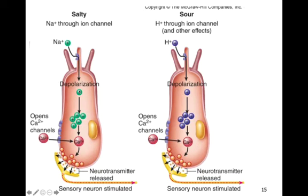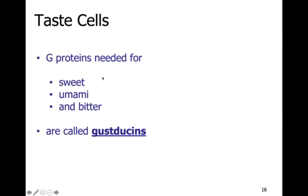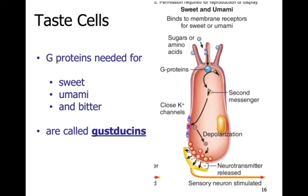What you need to know is that each taste bud has all types of taste cells, and each taste cell will only respond to its particular stimulus — salty responds to sodium, sour responds to hydrogen. For sweet, umami, and bitter, these are called the gustusins, and that requires G-proteins, so they're slightly more complicated than the salty and sour taste. You don't need to know all the details — you just need to know that it's a G-protein.